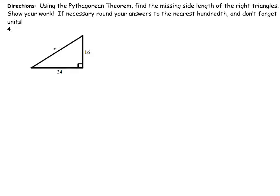Use the Pythagorean Theorem to find the missing side length of the right triangles. Show your work. If necessary, round your answer to the nearest hundredth, but don't forget the units.